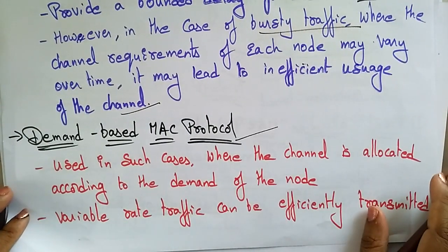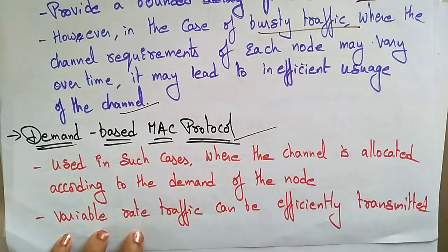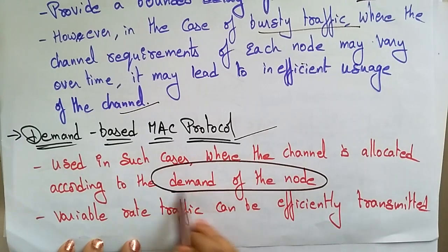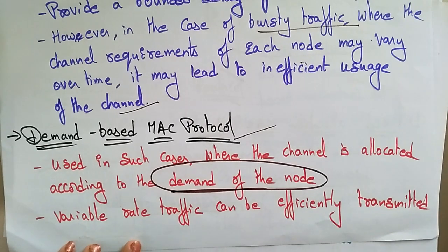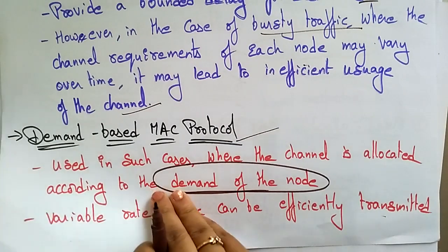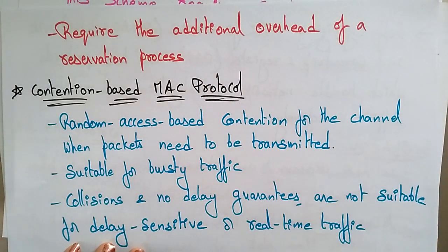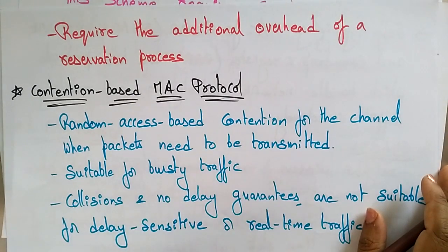The next type is the demand-based protocol. This is used in cases where the channel is allocated according to the demand of the node — only when required is the battery power used. Variable rate traffic can be efficiently transmitted using this protocol. However, it requires the additional overhead of a reservation process.